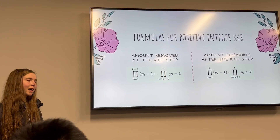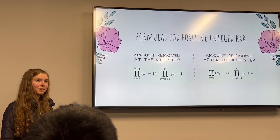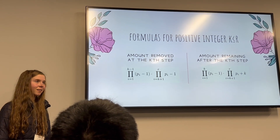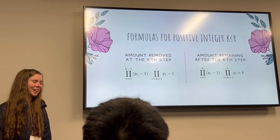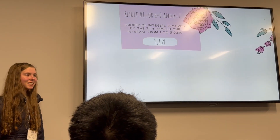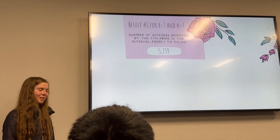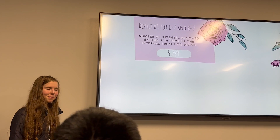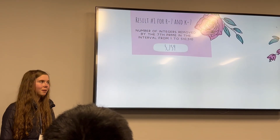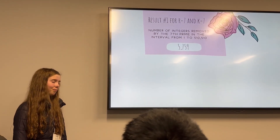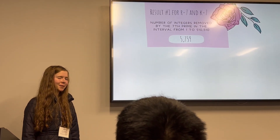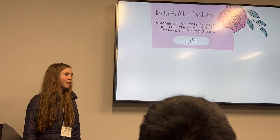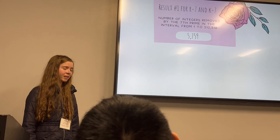If, for example, our r was 7, that would mean we were looking at the interval from 1 to the product of the first 7 primes, and we could analyze the amount removed and the amount remaining for the 1st through 7th steps of the algorithm. To see these results in action, let's consider the case where r equals 7 and k equals 7. Plugging those values into our first formula, we find that the number of integers removed by the 7th prime in the interval from 1 to the product of the first 7 primes is 5,759. While that may seem like a large number, it's actually only about 1% of the overall amount of integers in our interval. So by the time we're getting to the 7th prime, the efficiency of prime removal has significantly decreased, just like our formula predicted.